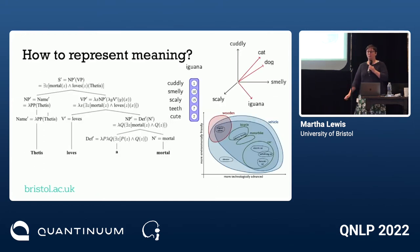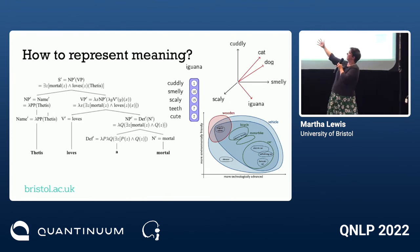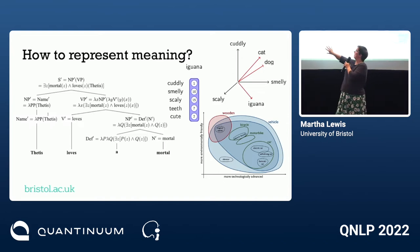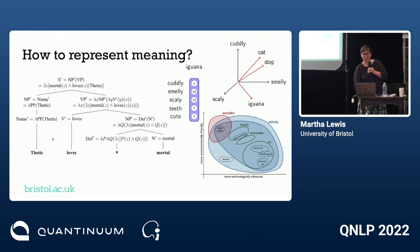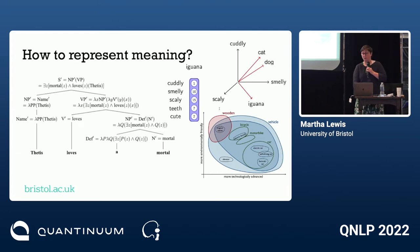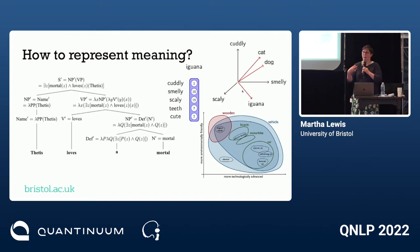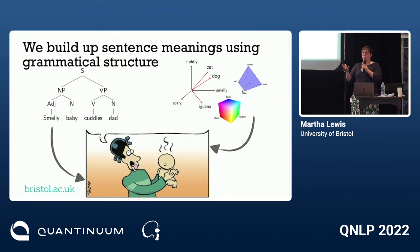Categorical compositional distributional semantics: how should we represent meaning? On one hand, we could represent words and how they compose using logical or grammatical constructions that tell us how to go from individual words up to the meaning of a sentence — and that's been successful. On the other hand, we can represent words in a vector-based or region-based way. For example, with dimensions like cuddly, smelly, and scaly, cat and dog are close to each other while iguana is further away, where closeness in vector space represents closeness of meaning.